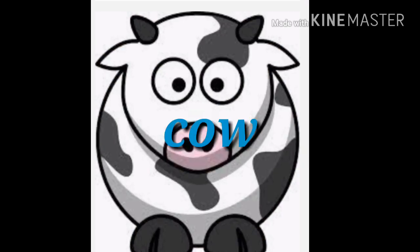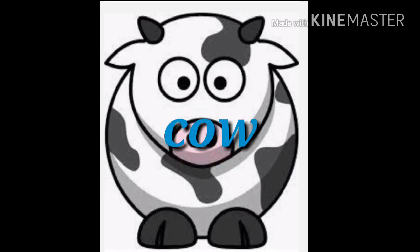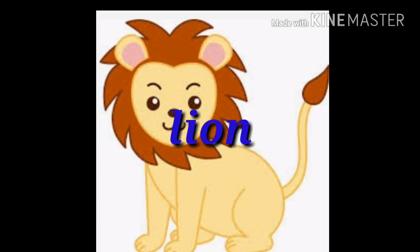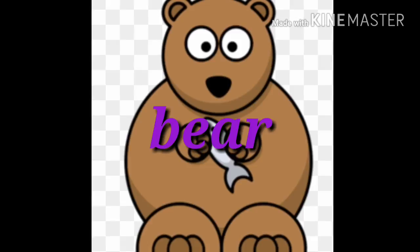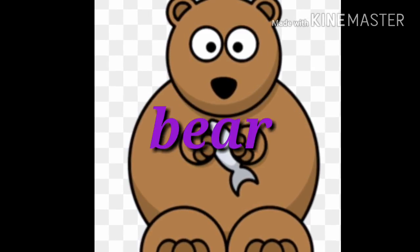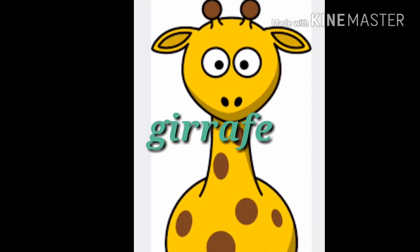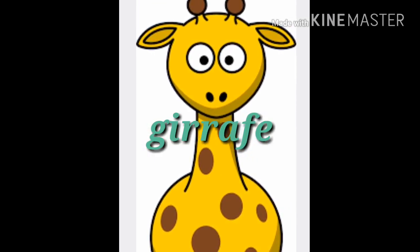S for Sheep — Sheep's color is white. C for Cow — Cow's color is black and white. L for Lion — Lion's color is yellow. B for Bear — Bear's color is brown. D for Giraffe — Giraffe's color is yellow and brown.